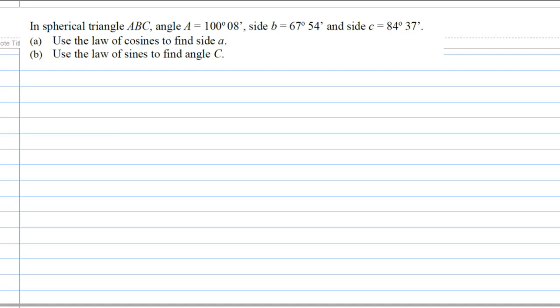This video is a revision on Spherical Triangle. In Spherical Triangle ABC, angle A is 100 degrees 8 minutes, side b is 67 degrees 54 minutes, and side c is 84 degrees 37 minutes.